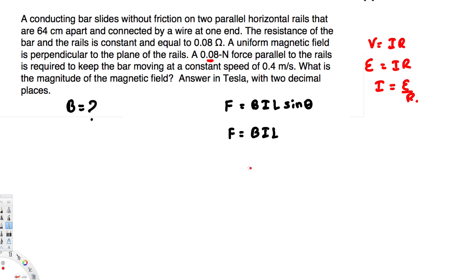Let's plug this one. Instead of I, we are going to plug emf/R. So this is going to become F = B times emf divided by R times L. Okay, now do we have the emf? We don't have the emf either, so we have to plug something else for the emf.